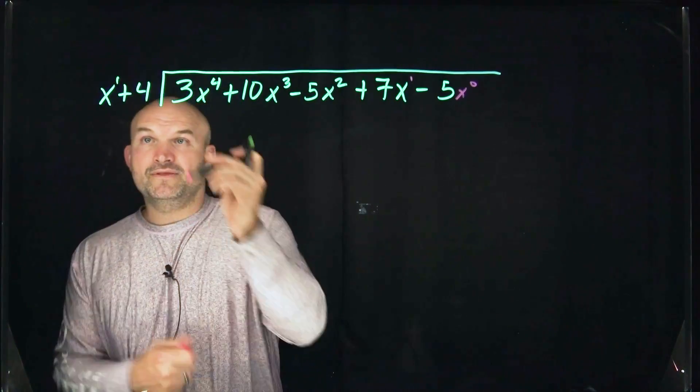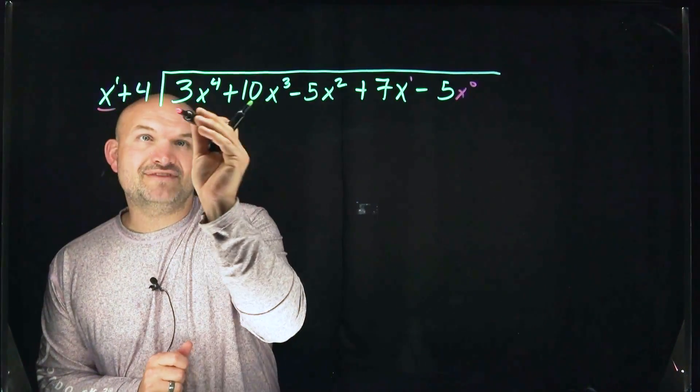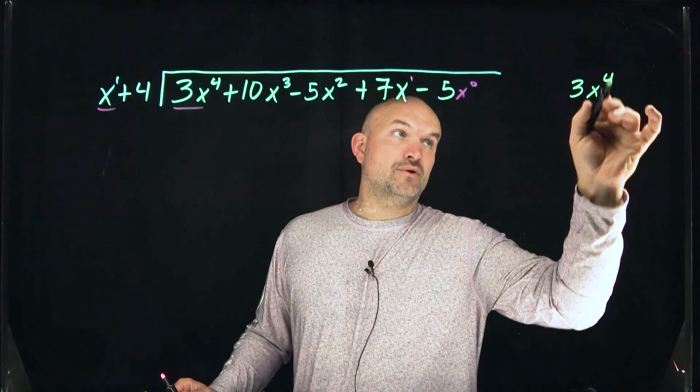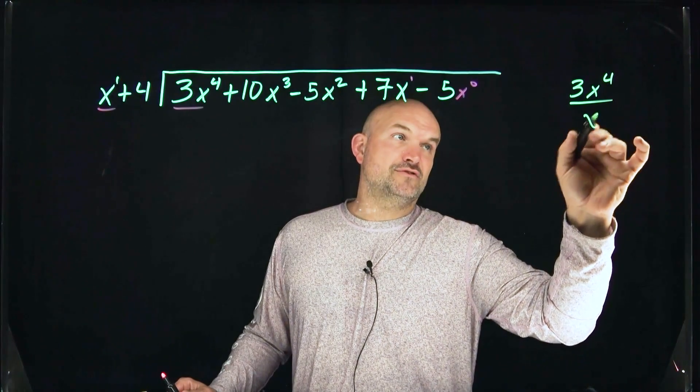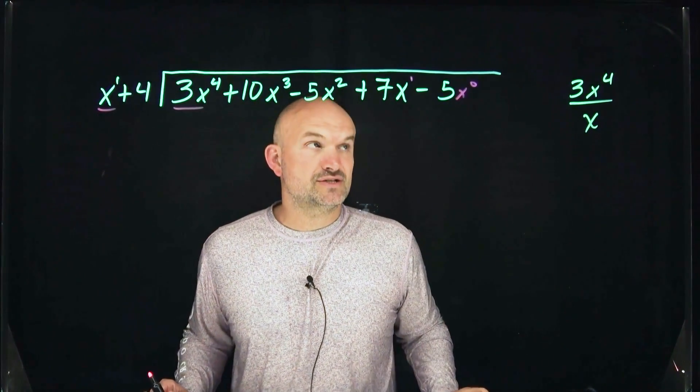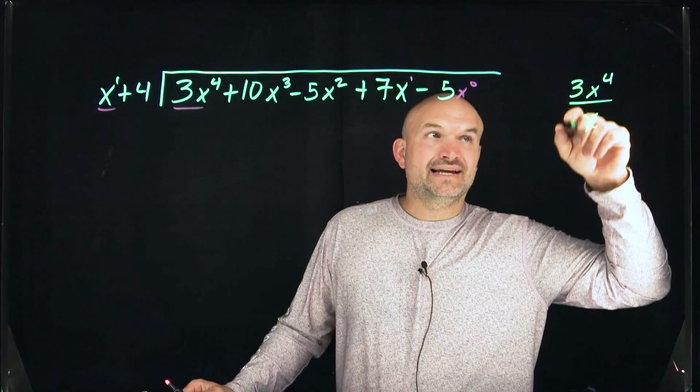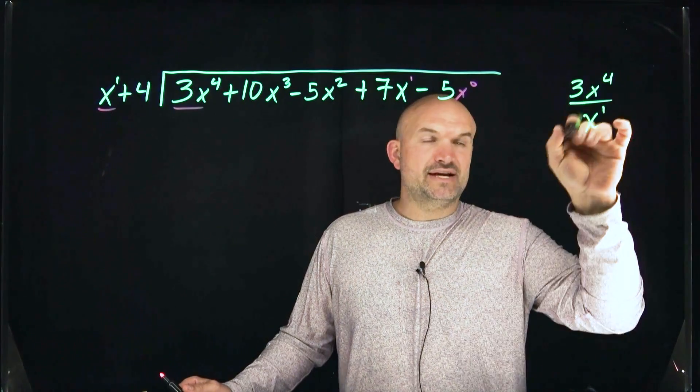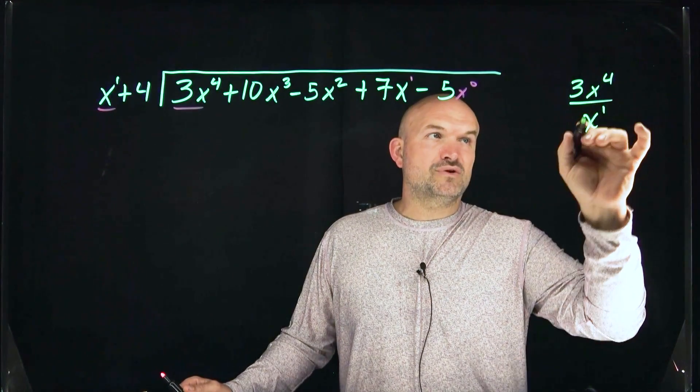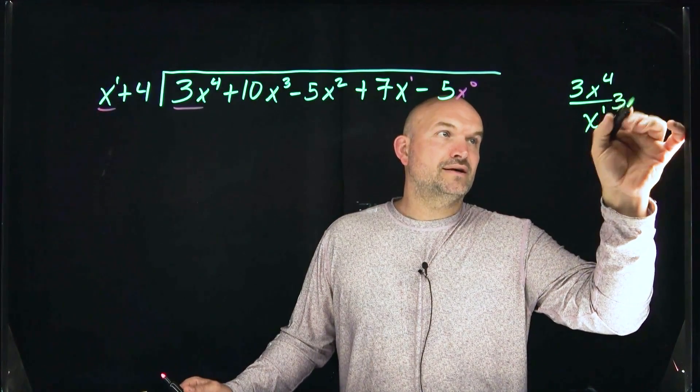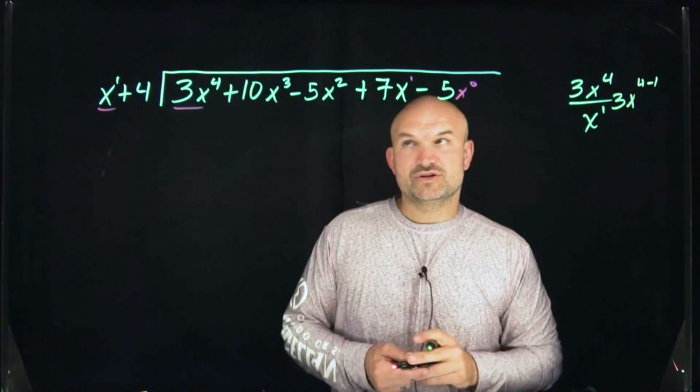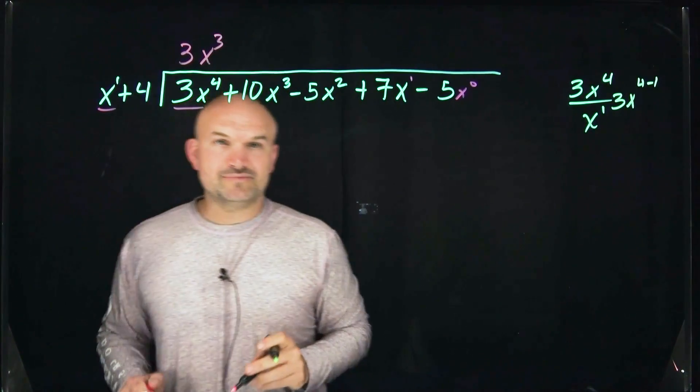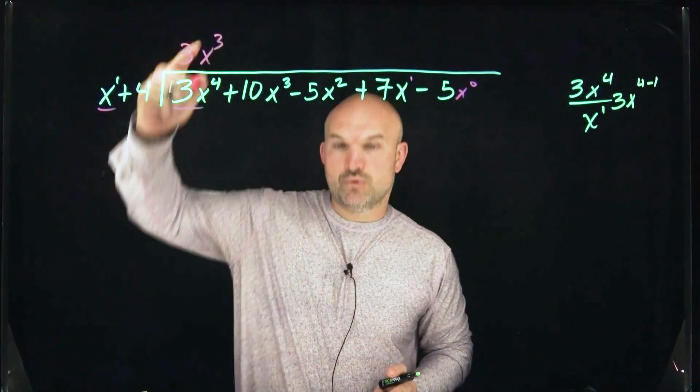We're always going to take the first term of our divisor and divide it into the first term of our dividend. To understand and explain this, we're going to take 3x to the fourth and divide it by x to the first power. That is the first question we are asking ourselves. How many times does x evenly divide into 3x to the fourth? We can use our rules of exponents. x to the fourth divided by x to the first is going to be 3x to the four minus one, which is going to give us here 3x cubed. So that is going to be the first answer in our quotient.